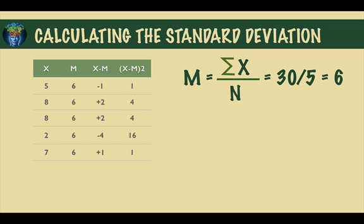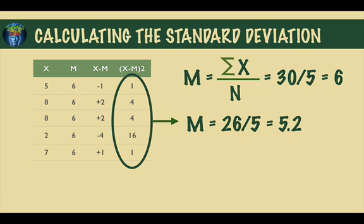Next you include the mean in the second column, and in the third column you subtract the mean from each of the scores. Then in the fourth column you square each of these differences. Once you have done so, you can calculate the mean of these squared differences.